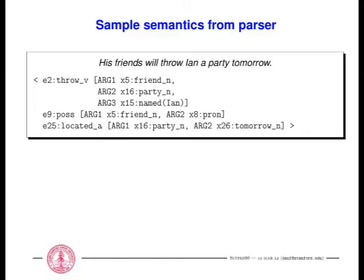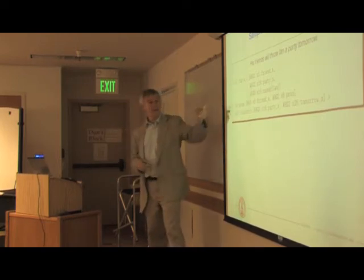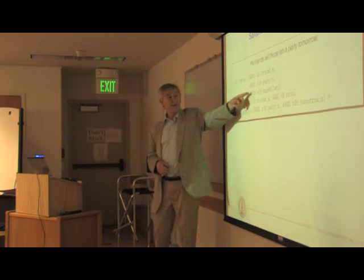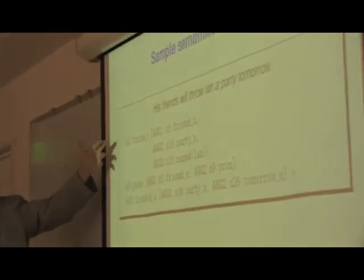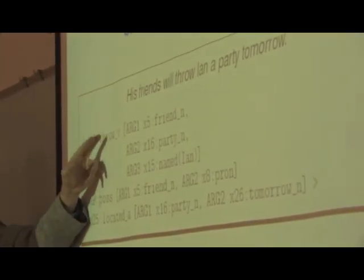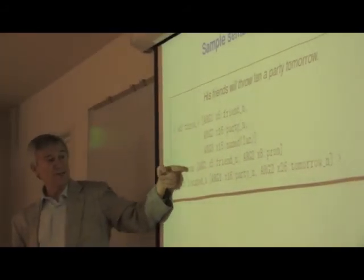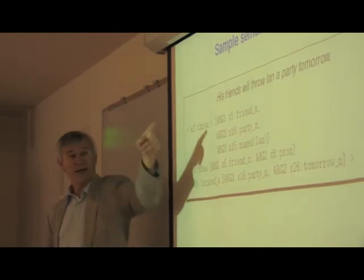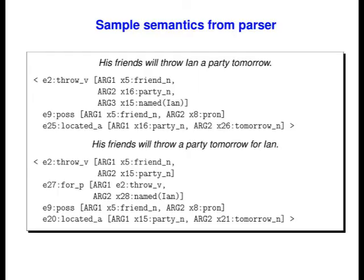The kind of semantic representation we're producing is yet another notational variant of familiar representations. This is minimal recursion semantics — essentially a set of elementary predications, relations with arguments. We label these argument positions instead of using order encoding because that makes it easier for us to write rules that manipulate them. So here, for 'friends will throw Ian a party tomorrow,' there's a throw relation which has a friend, a party, and Ian as the three arguments.